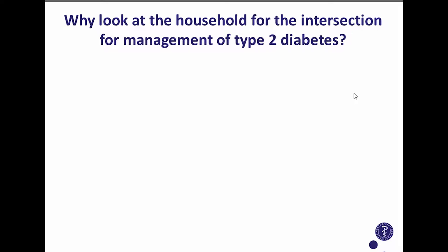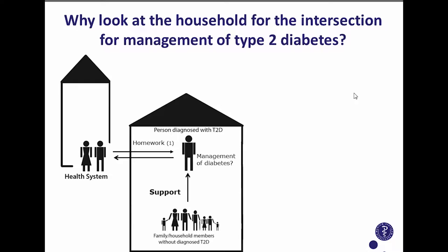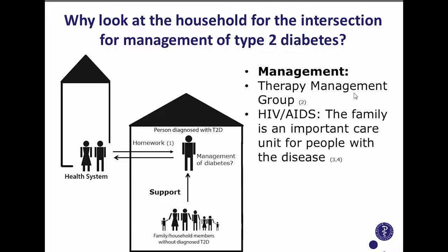Why look at the household as the intersection for management of type 2 diabetes? If someone is diagnosed with type 2 diabetes, they must manage their disease through some interaction with the health system, which provides the patient with 'homework' — a concept developed by American and Danish researchers. This homework involves tasks carried out at home: monitoring blood glucose, changes in diet, changing physical activity levels. The patient is most often supported by the family, and in sub-Saharan Africa, where health systems are often insufficient, the family is often the primary care unit.